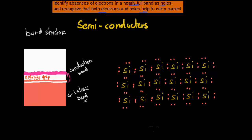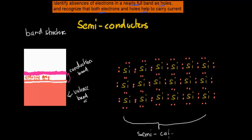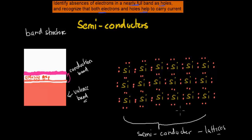Let's say this is a part of a semiconductor — silicon itself is a semiconductor. This here is just a small snippet of a sort of lattice of a semiconductor. This is the lattice, which means we have lots of these silicon atoms all in a row, one after the other.